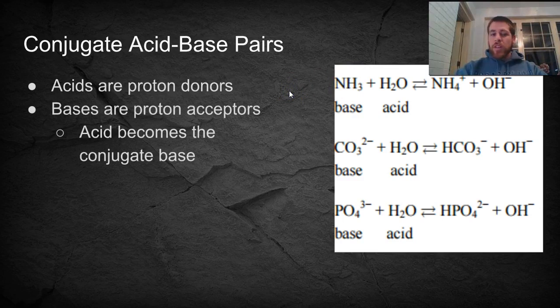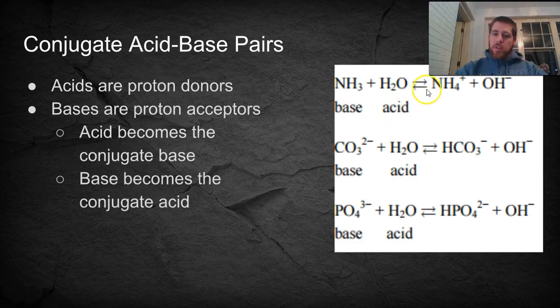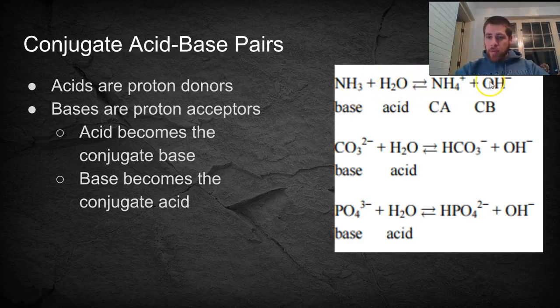Now there's also what's called the conjugate acids and the conjugate bases. The acid becomes the conjugate base. So if you look at this first example, our acid is our water. The conjugate base would then be OH-, because going backwards, it would have to gain a proton. So it gives off the proton, making it an acid in the forward reaction, but it gains the proton in the reverse reaction, making it a base. But it's a conjugate base because it's the reverse reaction. So the acid always becomes the conjugate base, and the base always becomes the conjugate acid.